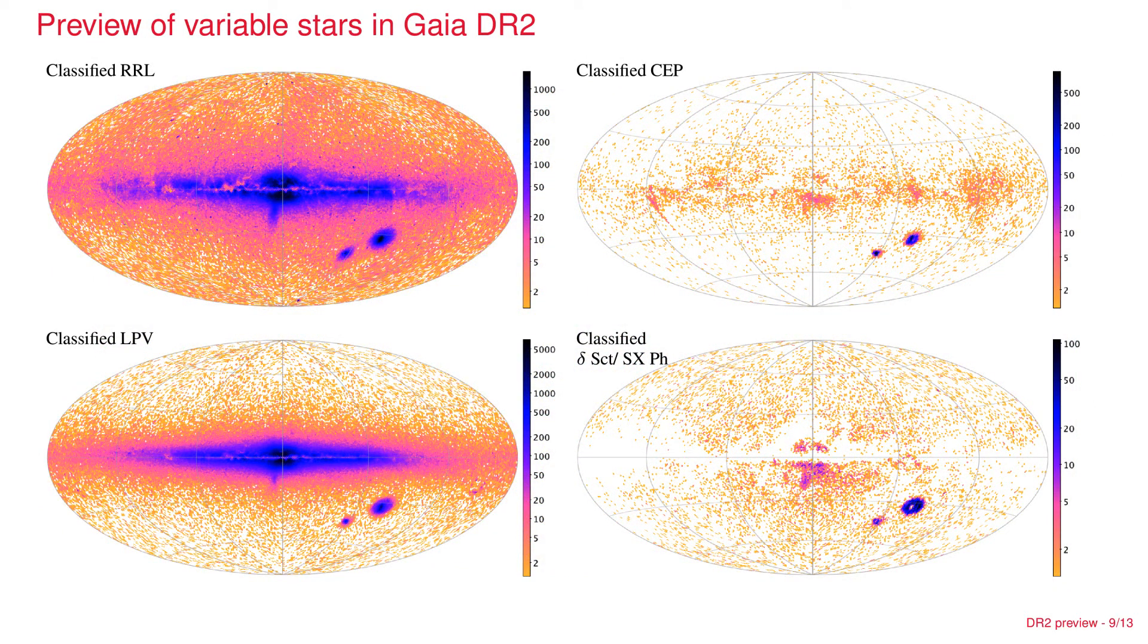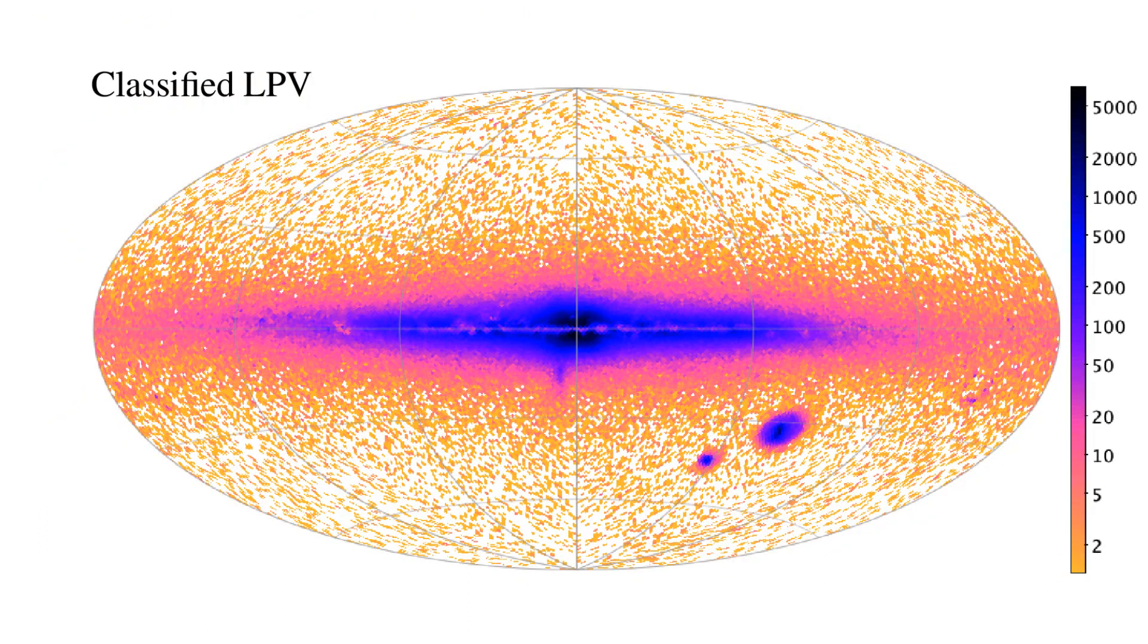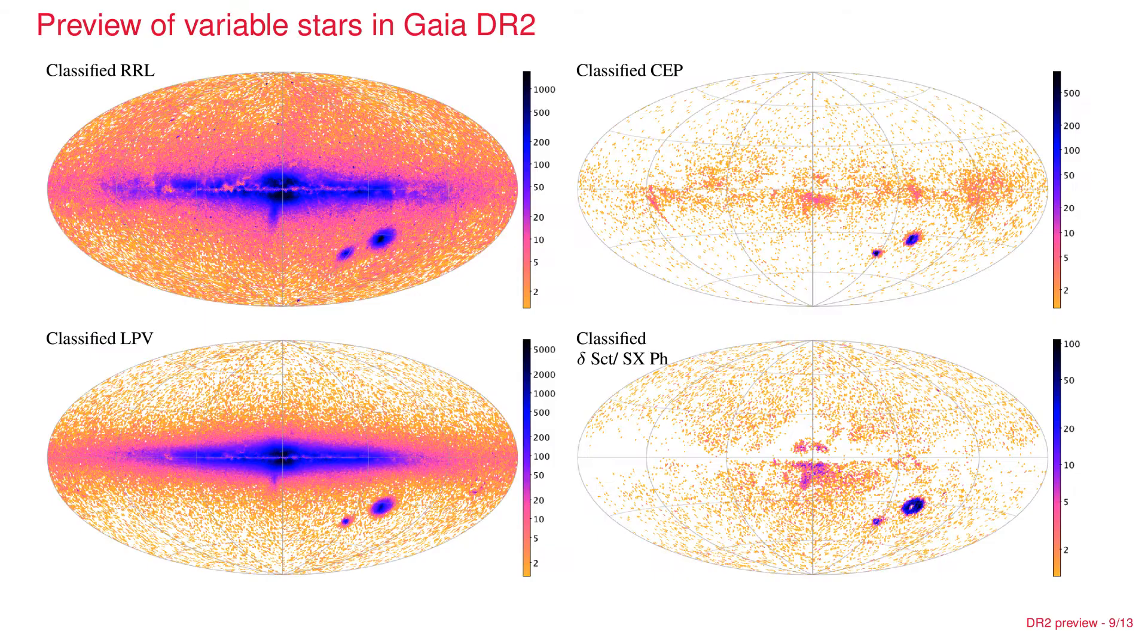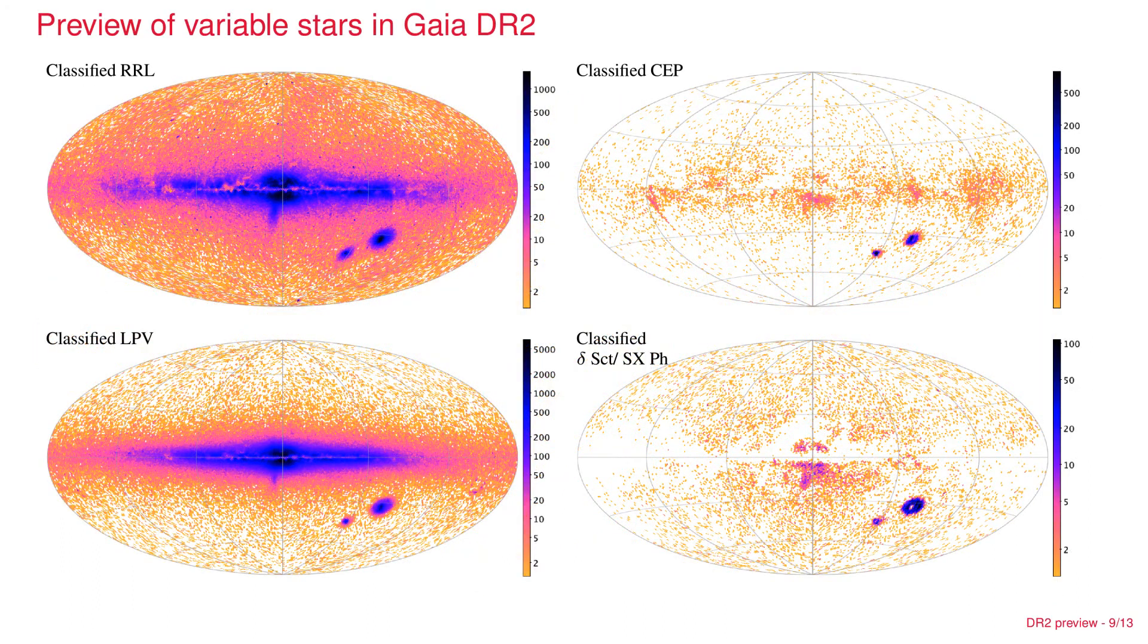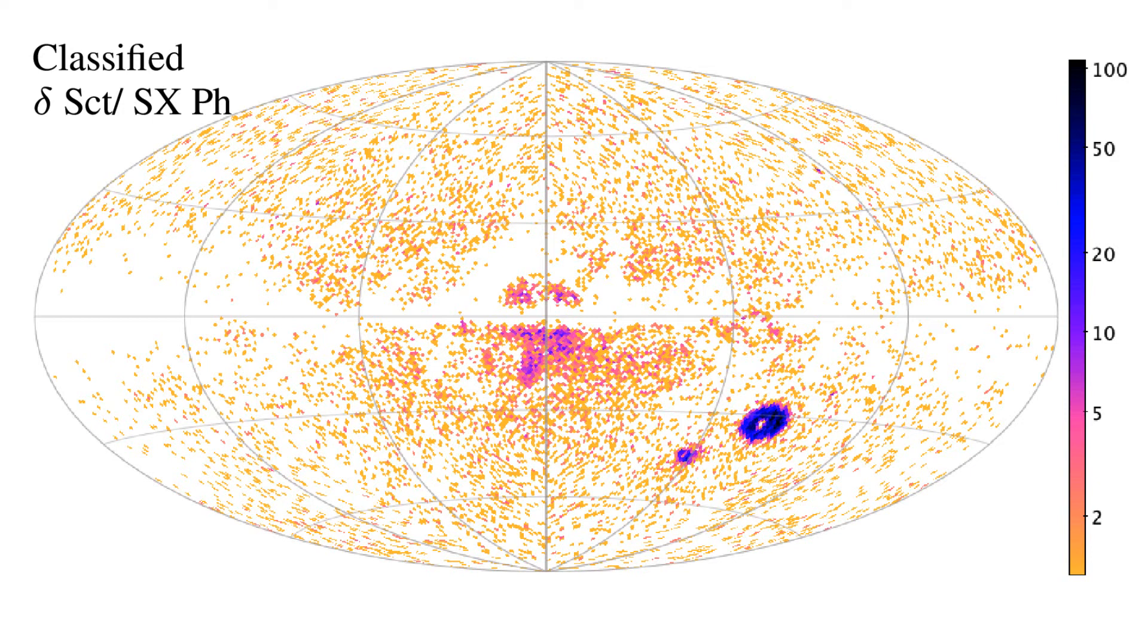You can also see it on the bottom in the sky distribution for long period variables. These are typically a bit younger than RR Lyrae and therefore they are more concentrated towards the galactic plane. But again, you see this Sagittarius dwarf sticking out. On the right, you see the Cepheids that were classified. These would be expected to be largely confined to the galactic plane and also a bit nearer because of their blue colors, so the ones that are far away suffer a bit from extinction.